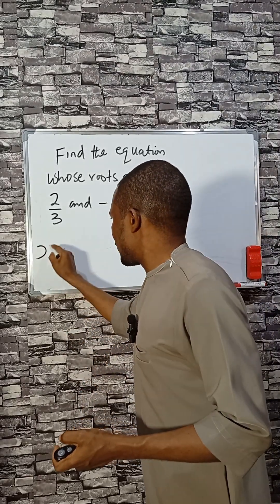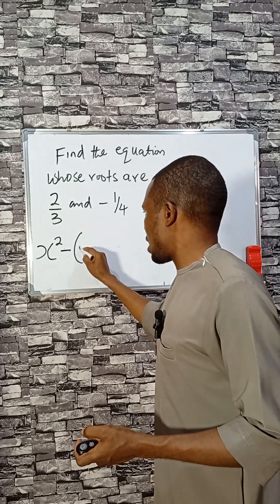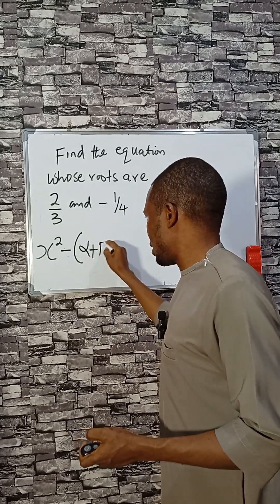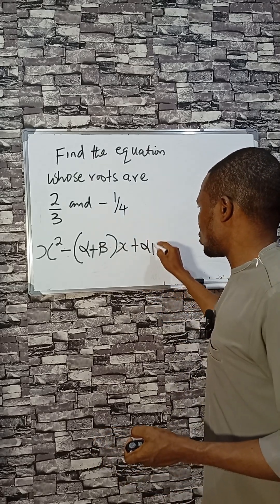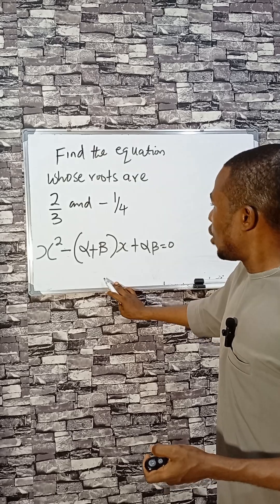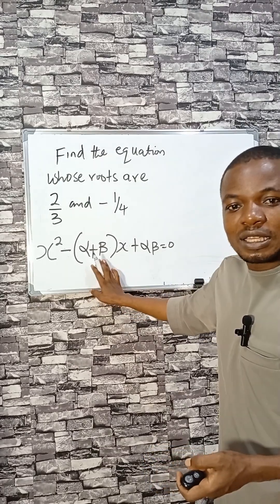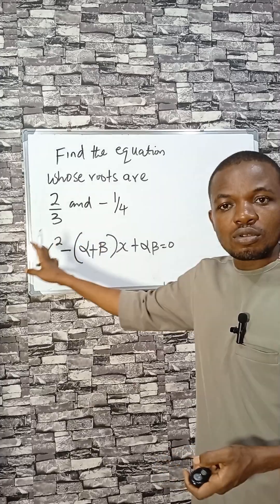The quadratic formula is given by x² minus sum of roots (α + β) times x, plus product of roots (αβ) equals zero. Once you understand this, α + β is the sum of the roots and αβ is the product of the roots.